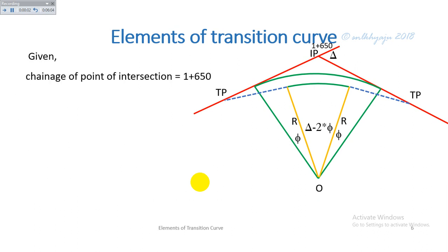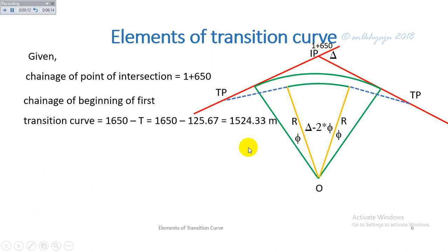For the chainage calculation: the chainage of the point of intersection IP is given as 1650 meters. The chainage of the beginning of the first transition curve, T1, is calculated as the chainage of IP minus the tangent length, giving 1524.33 meters.